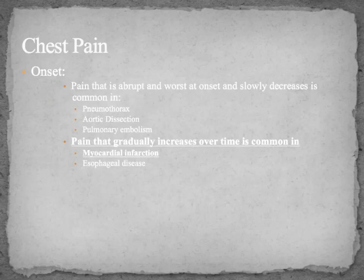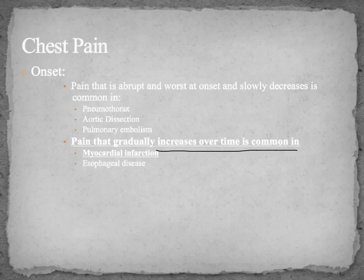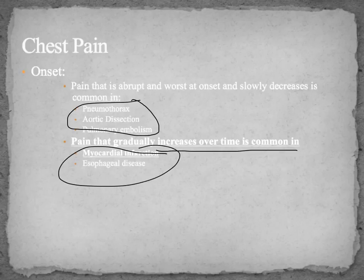Regarding onset: a sudden onset is going to be one set of etiologies, while a pain that gradually increases over time typically points to another. That's a rule of thumb supported by statistics, but it's not definitive.